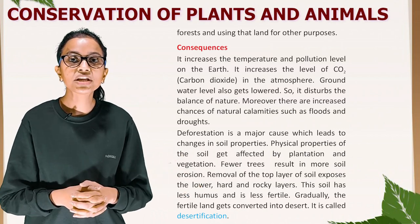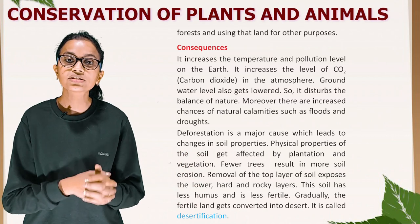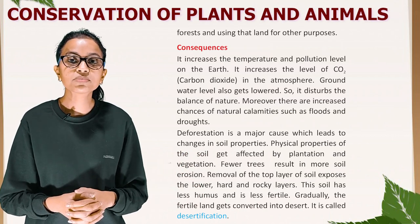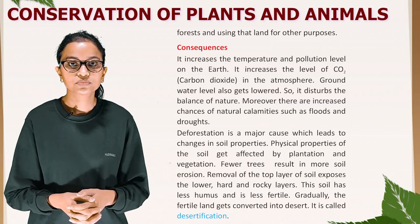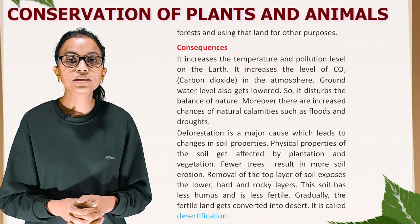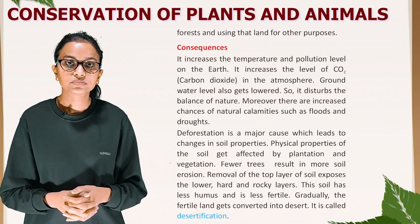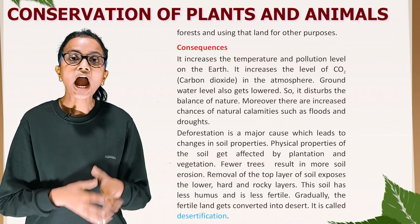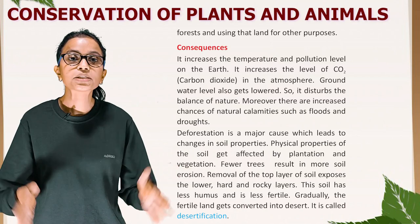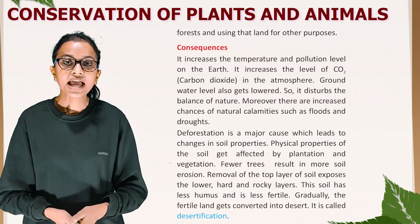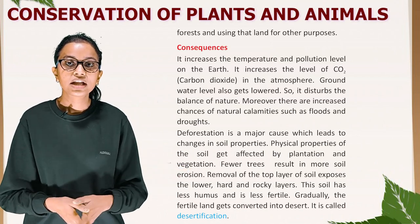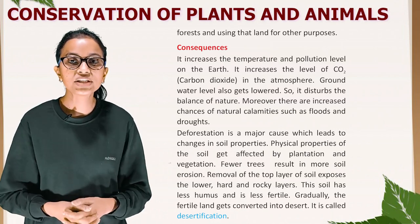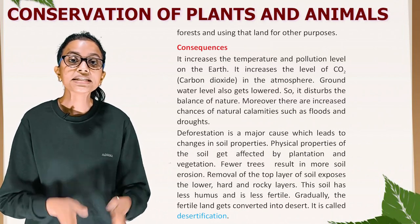Deforestation is a major cause which leads to changes in soil properties. Physical properties of the soil get affected by plantation and vegetation. Fewer trees result in more soil erosion. Removal of the top layer of soil exposes the lower hard and rocky layer. This soil has less humus and is less fertile. Gradually the fertile land gets converted into desert — it is called desertification.